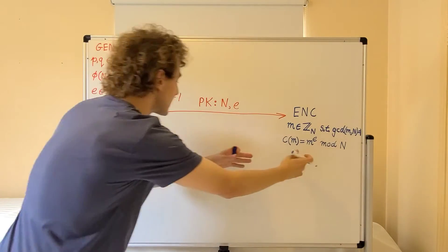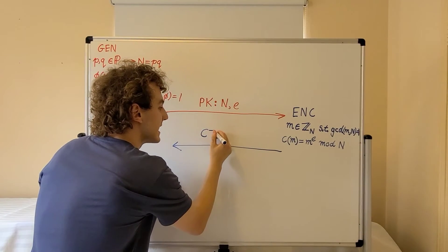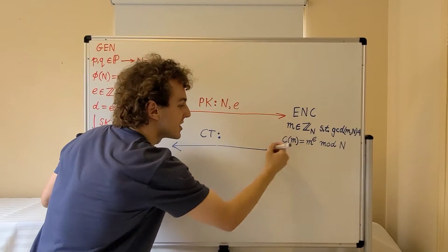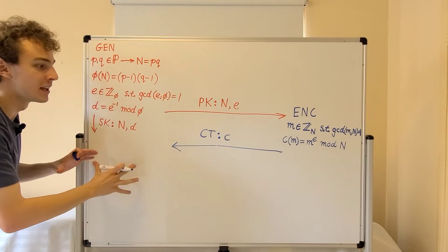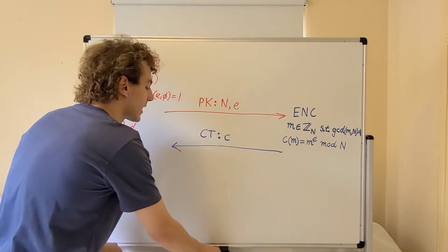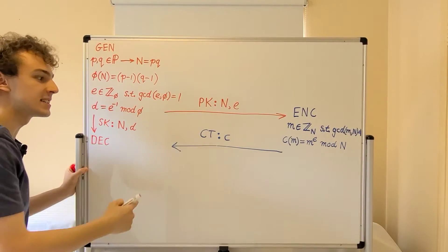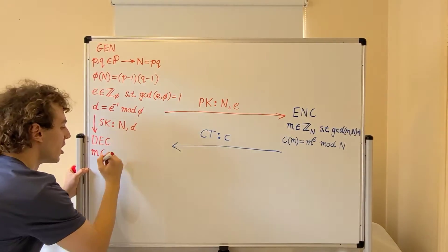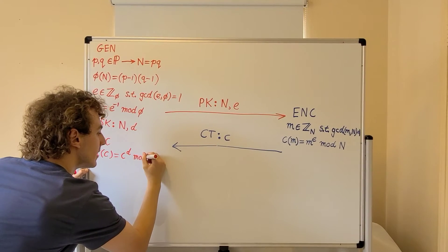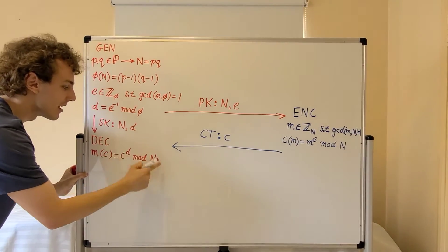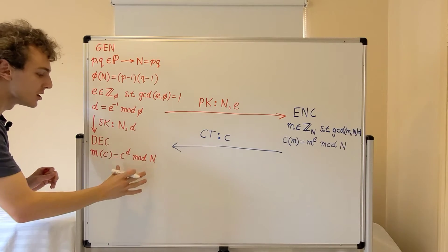We then send this ciphertext C through the public channel. The original participant who generated the keys can now decrypt this ciphertext. Decryption takes the ciphertext and recovers the message: we raise C to the power of D mod N. D and N come from the secret key, and C was received through the public channel, and that allows us to decrypt the message.